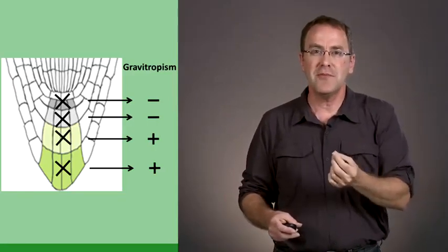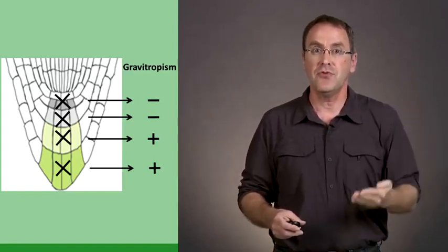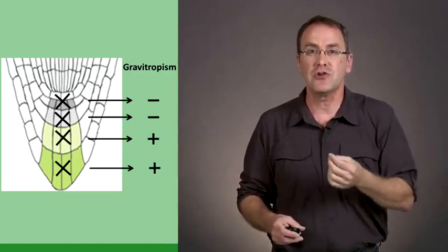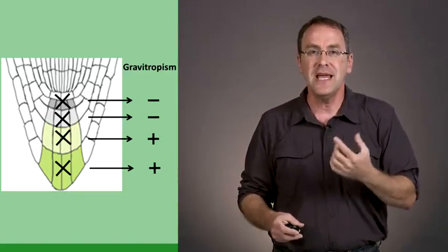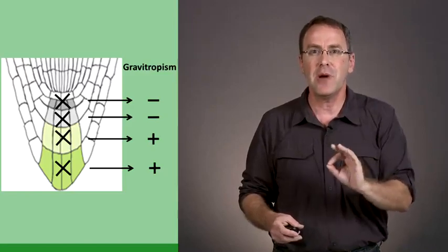What these experiments show, first starting with Darwin, and then through the genetic experiment and the laser ablation experiment, is that gravity is sensed in the root cap, and primarily, at least in Arabidopsis, in specific cells in levels three and four.